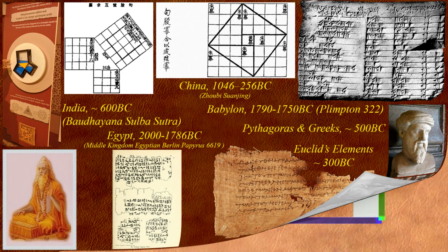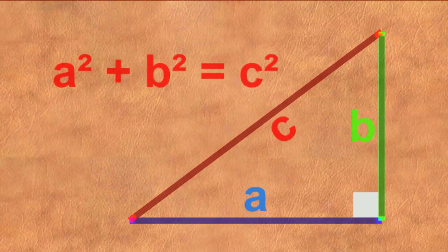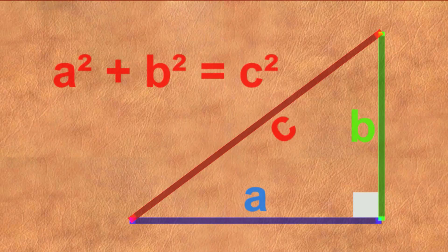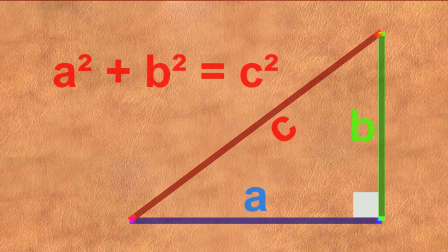So what exactly does the theory state? The sum of the squares of the two shorter sides of a right-angled triangle equals the square of the hypotenuse or longer side. A right-angled triangle or right triangle for short has a 90 degree angle between the two short sides. In this diagram the theory therefore states that a squared plus b squared equals c squared.